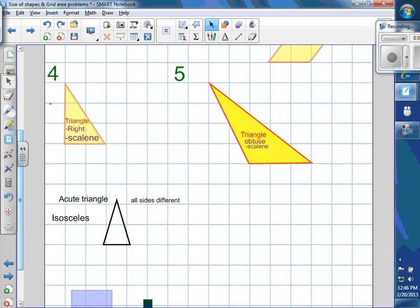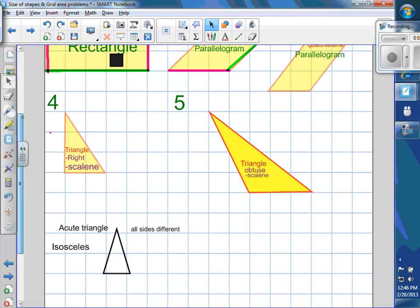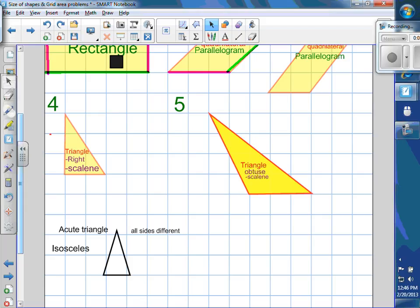This is a right scalene triangle. So what does the right part mean? Maddie? It has a square angle. It has that square angle, right? So if it's not a right triangle, then it has to be an obtuse triangle, like this one over here, because it has an angle that's bigger than the square angle.